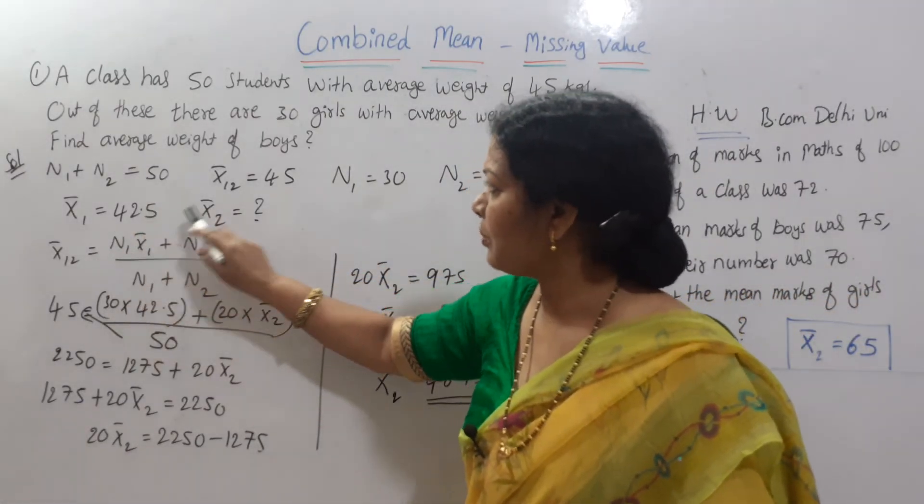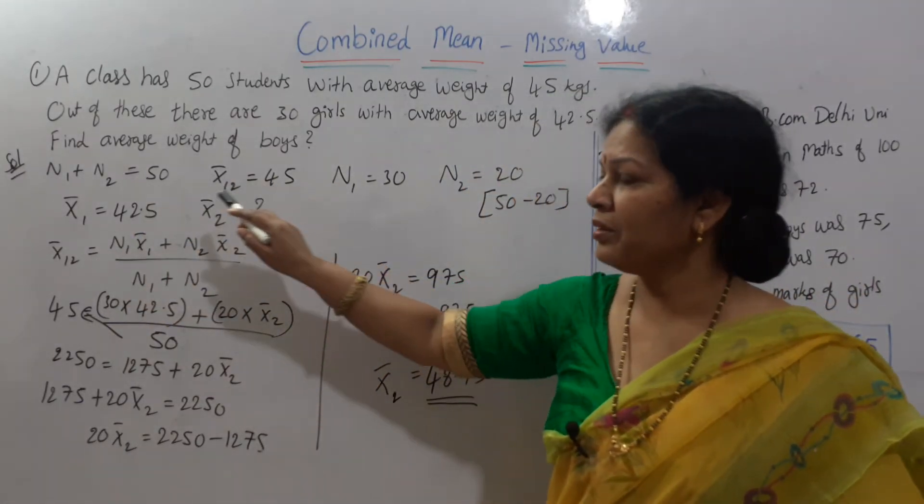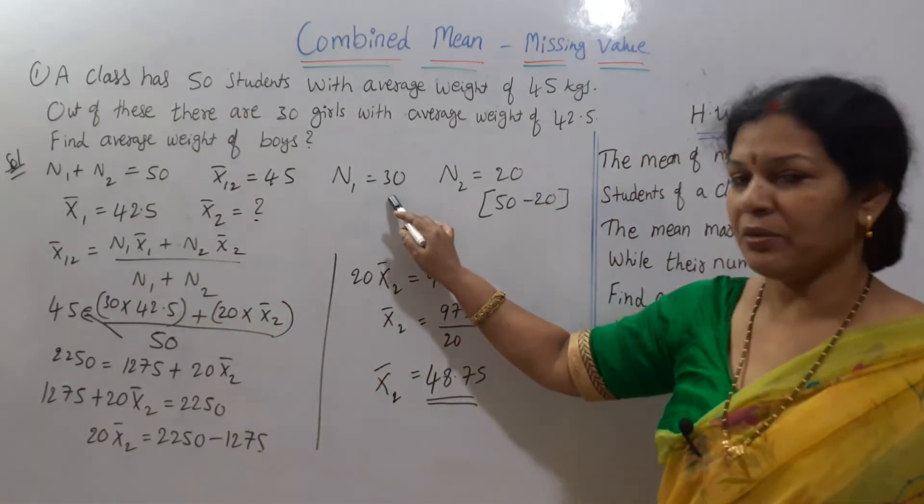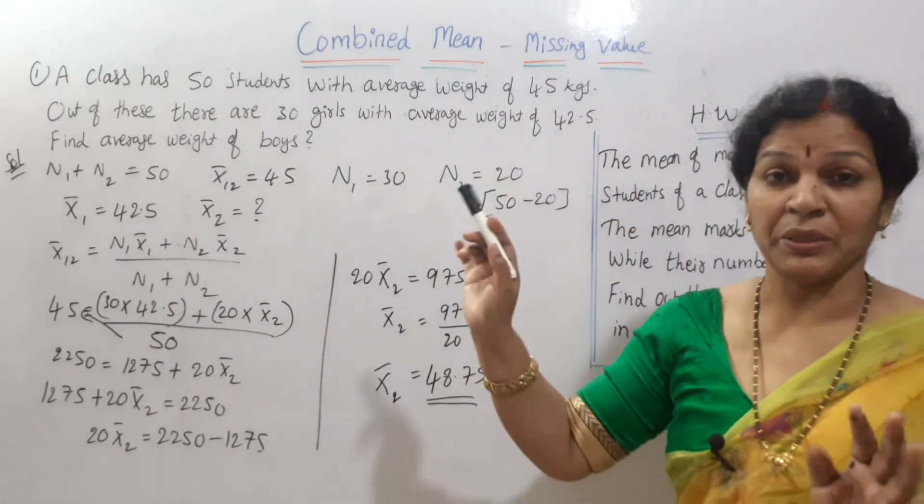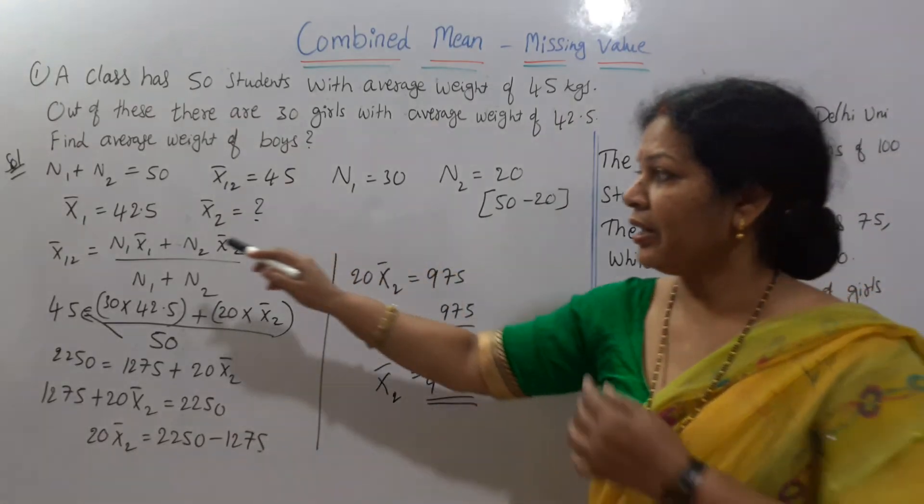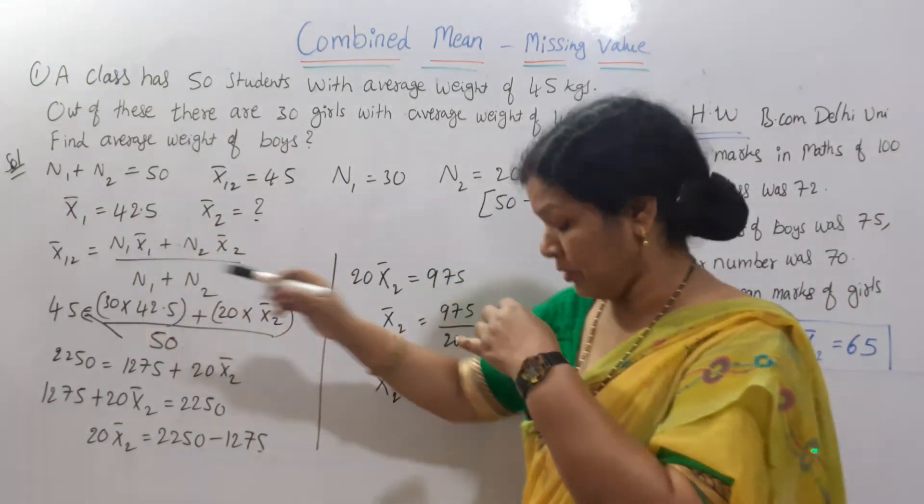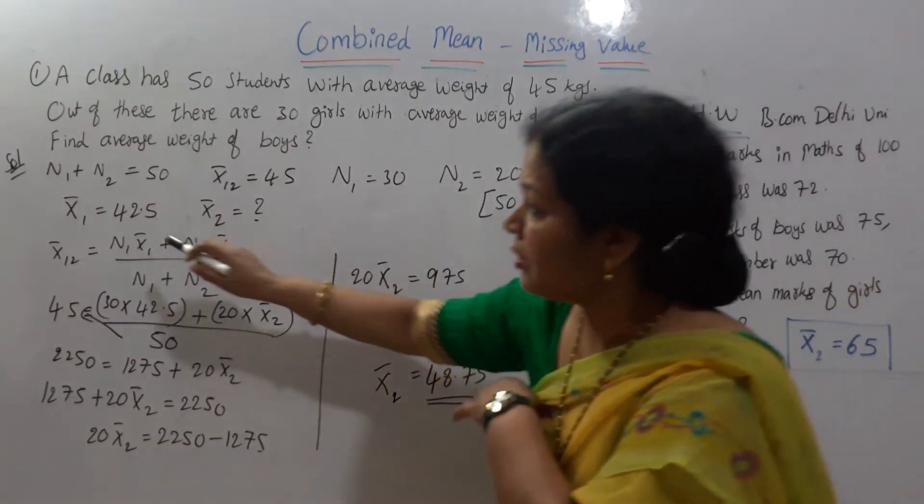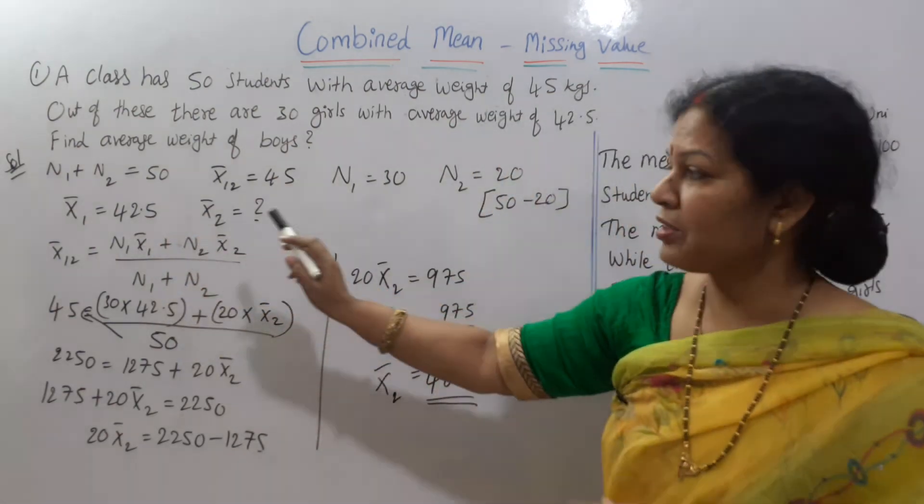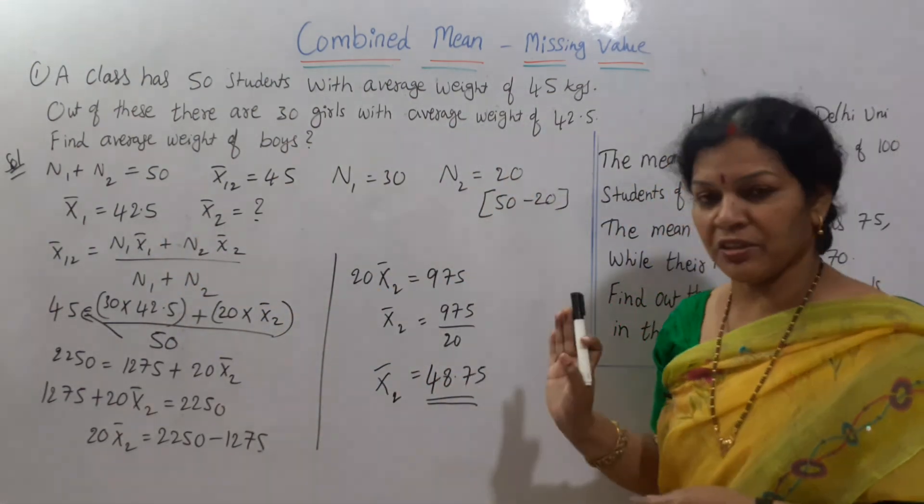Where it is? X bar 1,2, it is given. N1 plus N2 we know. N1 also we know. N2 we just came to know that 50 minus 30 is 20. And average weight of girls is given here. Average weight of girls is given, and average weight of boys we found. Like this. Am I clear?